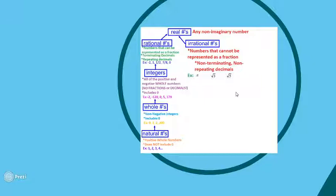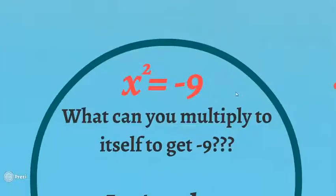Now we need to talk about a number that is not a real number. Let's say I want to know x when x² = -9. What number can you multiply by itself to get negative nine? Well, 3 × 3 = positive 9, and (-3) × (-3) = also positive 9. The only combination giving -9 would be -3 and +3, but then you're not squaring — you need the same number twice. So you cannot square a number and get a negative. It cannot happen; it does not exist in the real world.